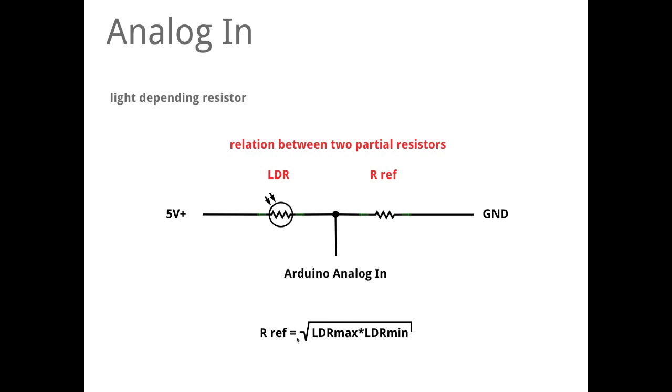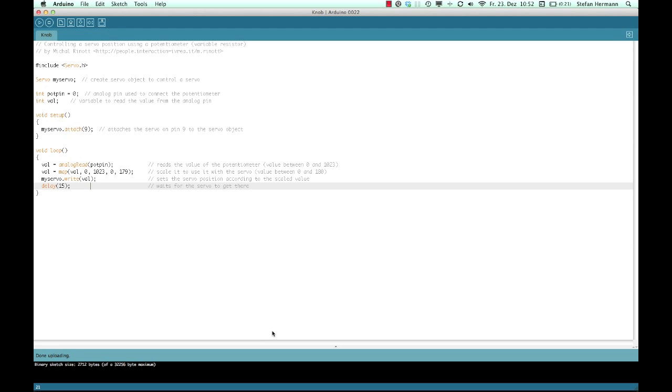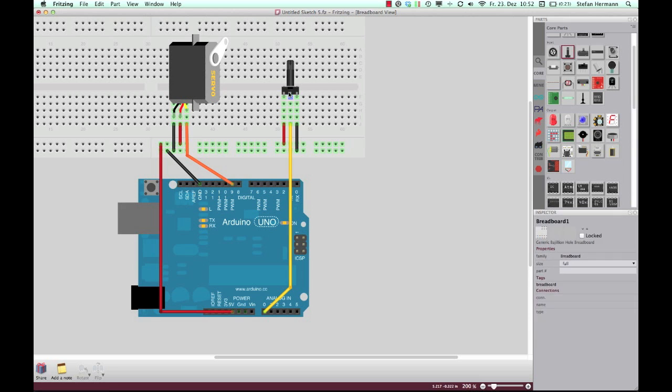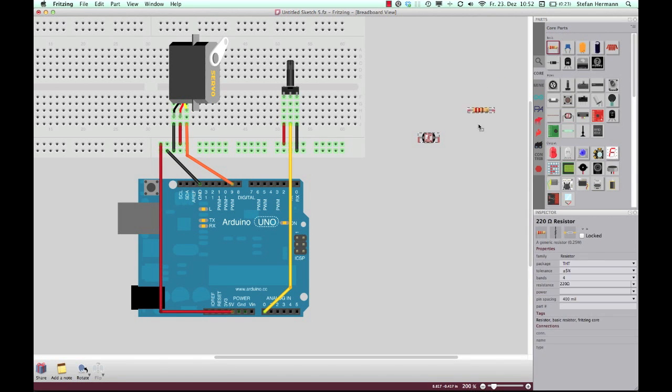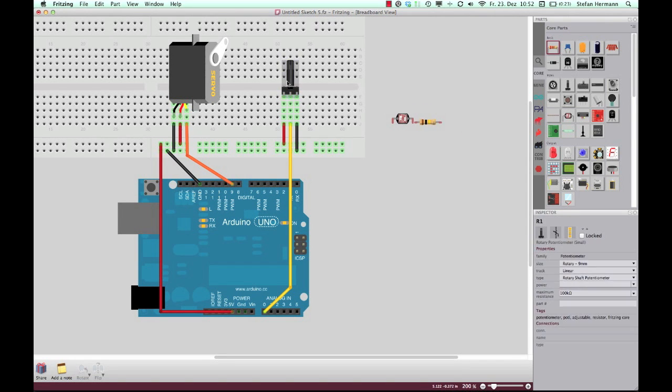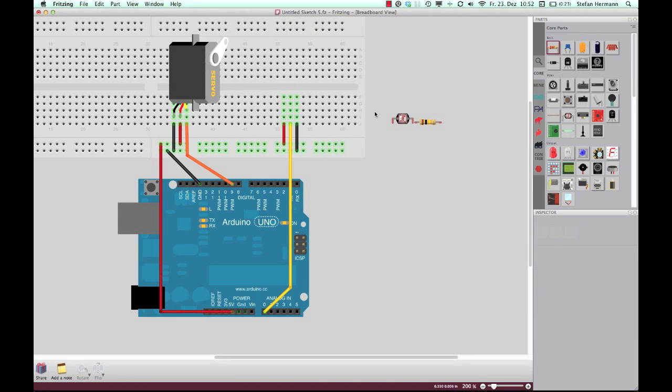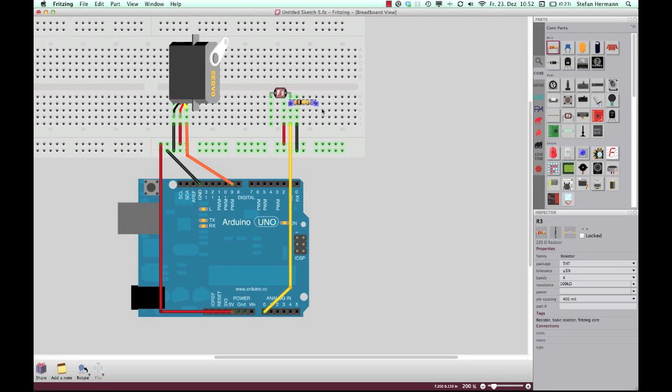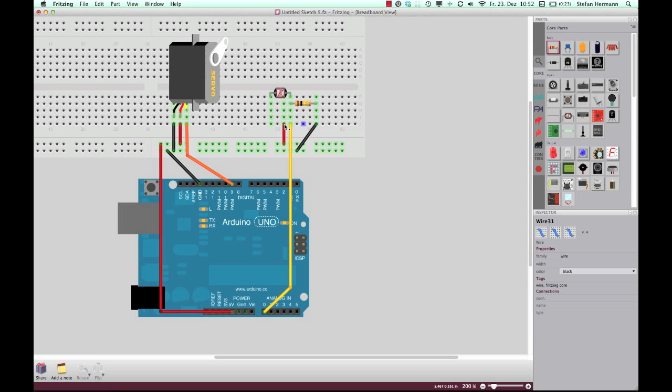Okay, so what we are doing is I do this in Fritzing at first - take the LDR and replace this here with the potentiometer. So I will delete the potentiometer and place in the LDR here, and the 100k resistor here, and then I only have to switch these wires from here to there. So that's all. Let's see how this is looking in reality.